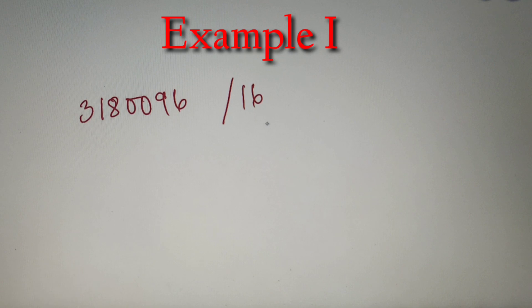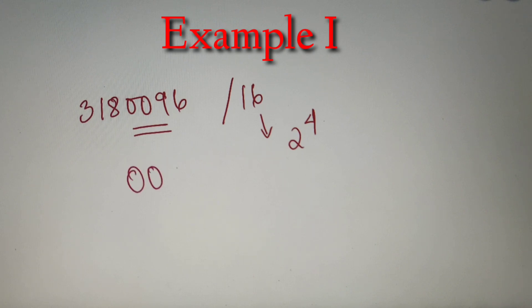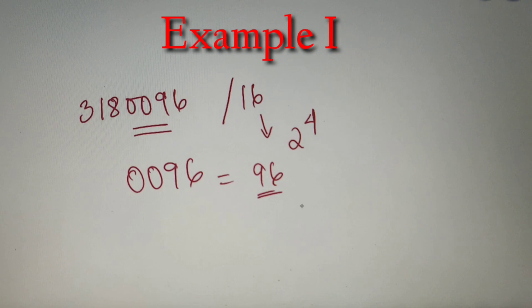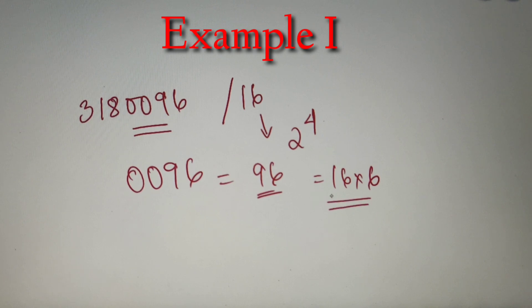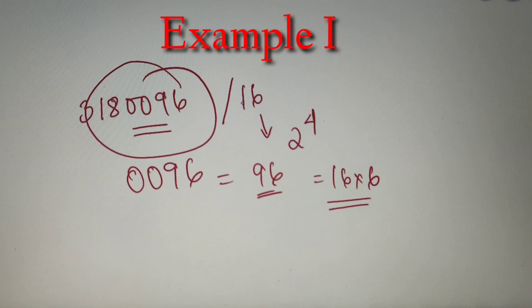For our first question, we have to check whether the number 3180096 is divisible by 16 or not. Now 16 is equal to 2 raised to power 4, so we have to check the last four digits. The last four digits are 0096, which we can write as 96. We check whether 96 is divisible by 16. We can clearly see that 96 is divisible by 16 because 96 equals 16 into 6. So the complete number is divisible by 16 because its last four digits are divisible by 16.